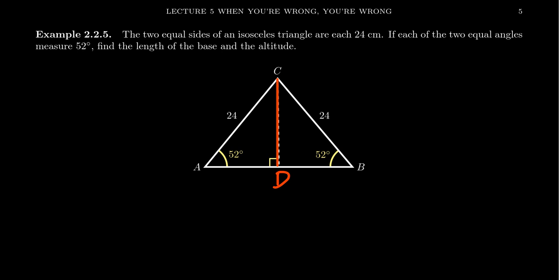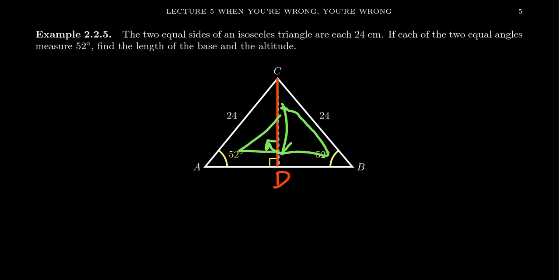An isosceles triangle can be cut into two pieces, and those two triangles are right triangles. That's what I meant by isosceles triangles being very much related to right triangles. Basically, an isosceles triangle is just a double right triangle — if you take a right triangle and reflect it over one of its sides, you form an isosceles triangle.